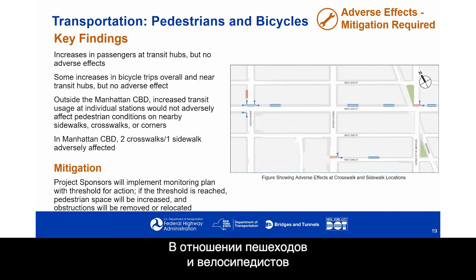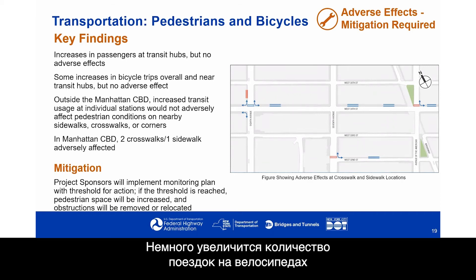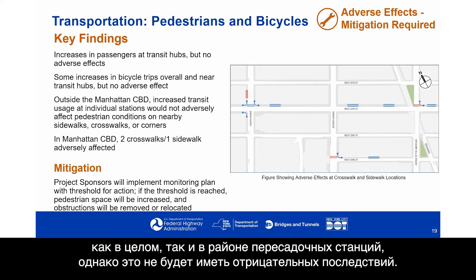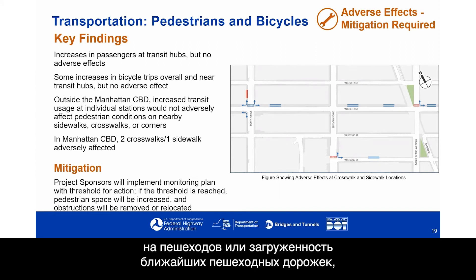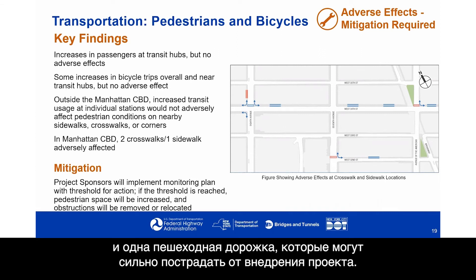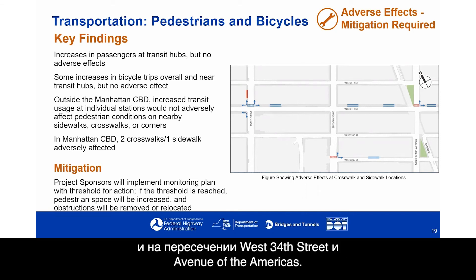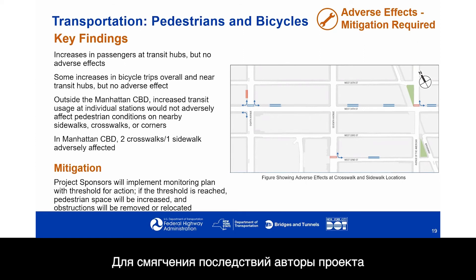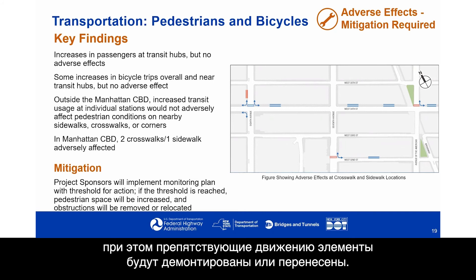With respect to pedestrians and bicycles, the EA found that increases in passengers at transit hubs would have no adverse effects. There would be some increases in bicycle trips overall and near transit hubs, but no adverse effects. Outside the Manhattan CBD, increased transit usage at individual stations would not adversely affect pedestrian conditions on nearby sidewalks, crosswalks, or corners. Within the Manhattan CBD, two crosswalks and one sidewalk would be adversely affected — on 8th Avenue near West 32nd Street, 7th Avenue, and West 34th Street and Avenue of the Americas. For mitigation, a monitoring plan will be implemented and if thresholds are reached, pedestrian space would be increased and obstructions removed or relocated.